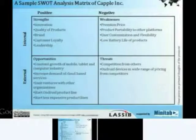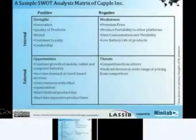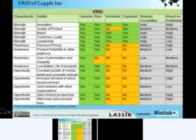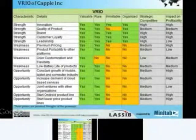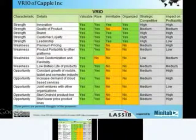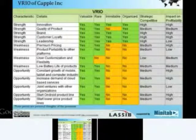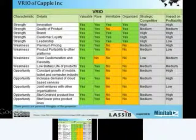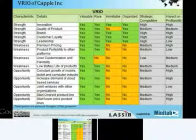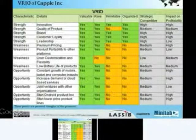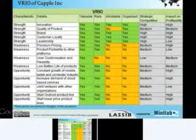Now that we have completed the SWOT analysis, we can map these characteristics to the VRIO framework and find out the implications for competitive advantage and other strategic priorities. There are seven columns in the framework: the first indicates the characteristics, the next four are for VRIO, and the last two are the strategic priorities — here, strategic competitive advantage and impact on profitability.